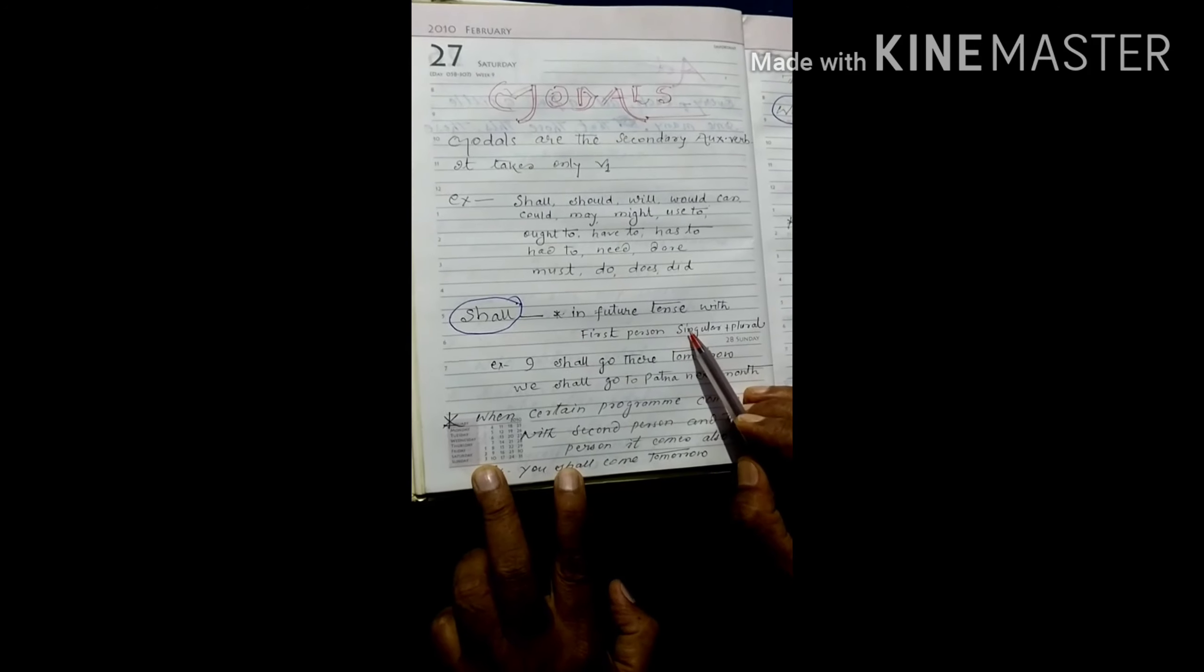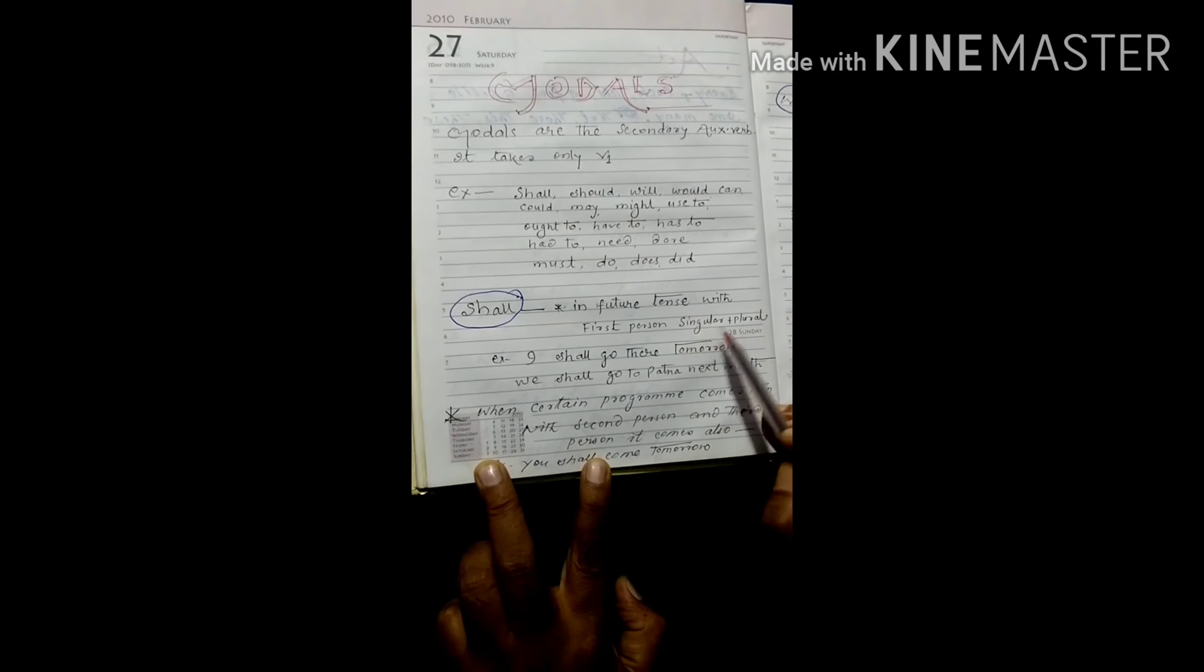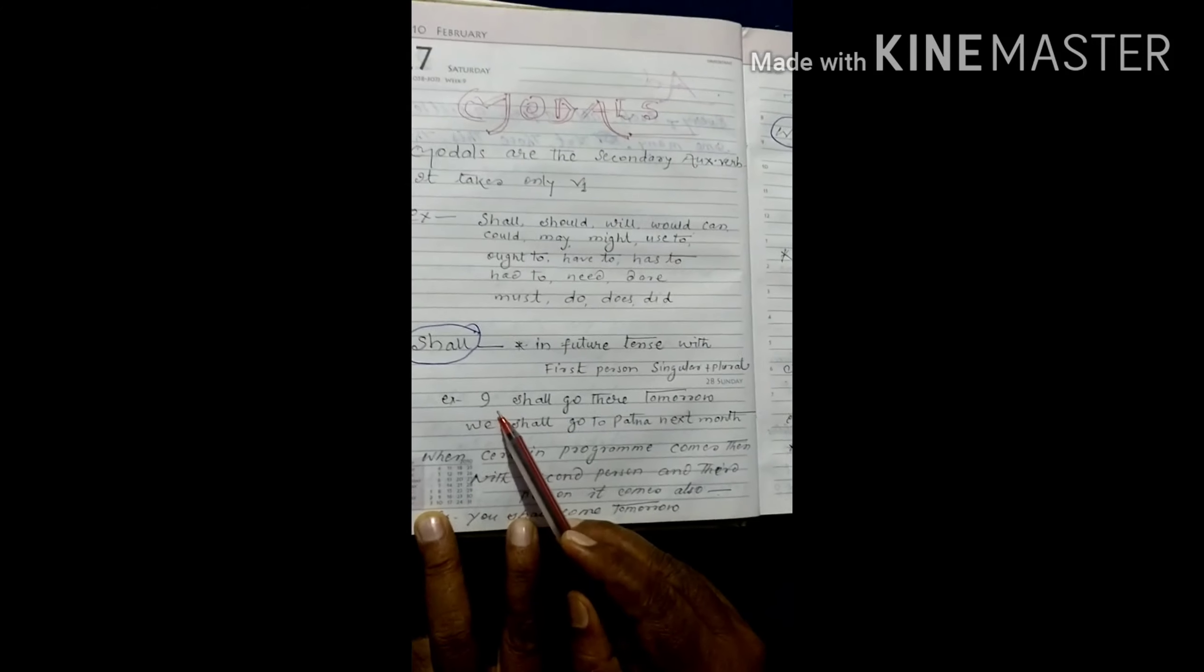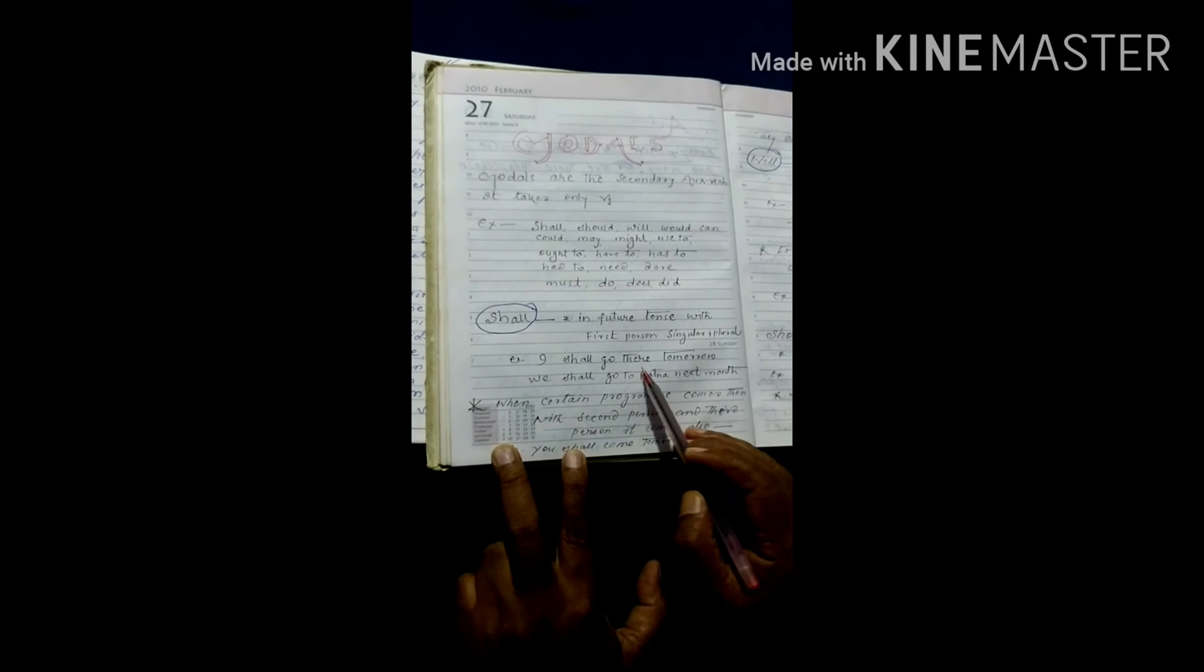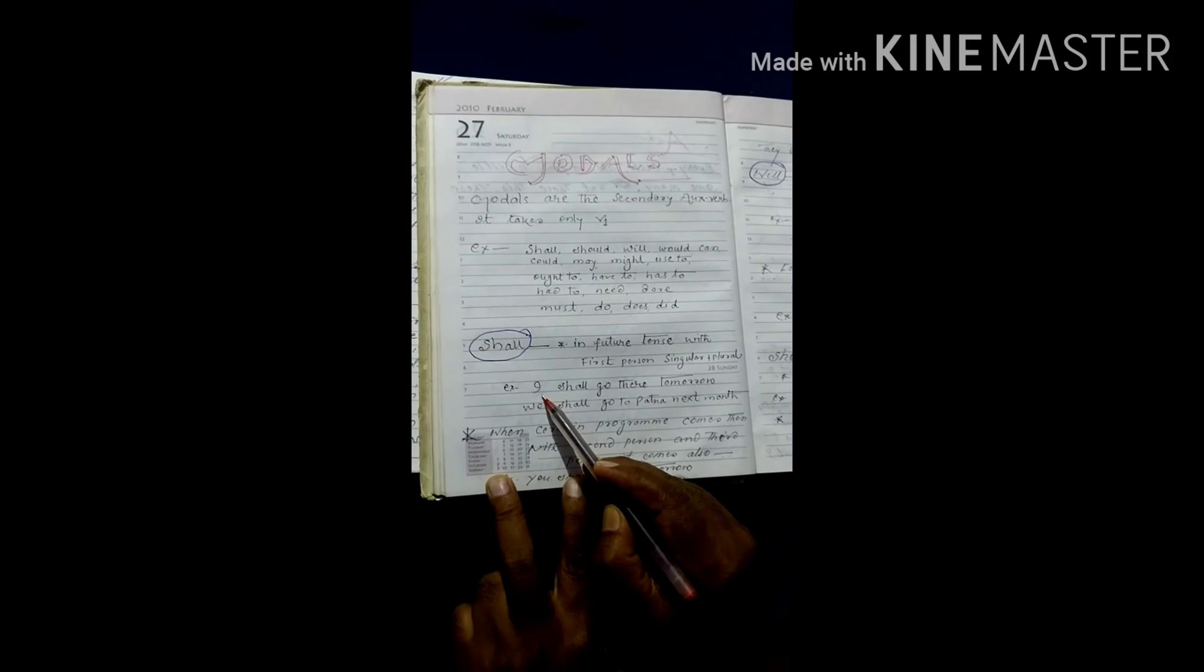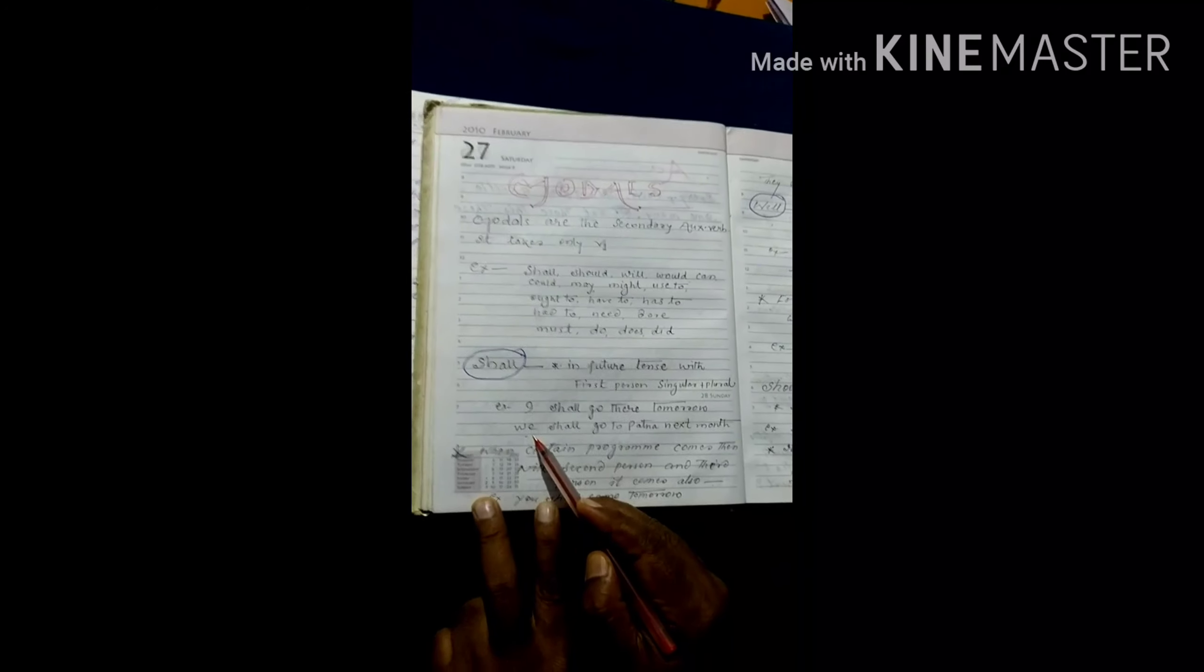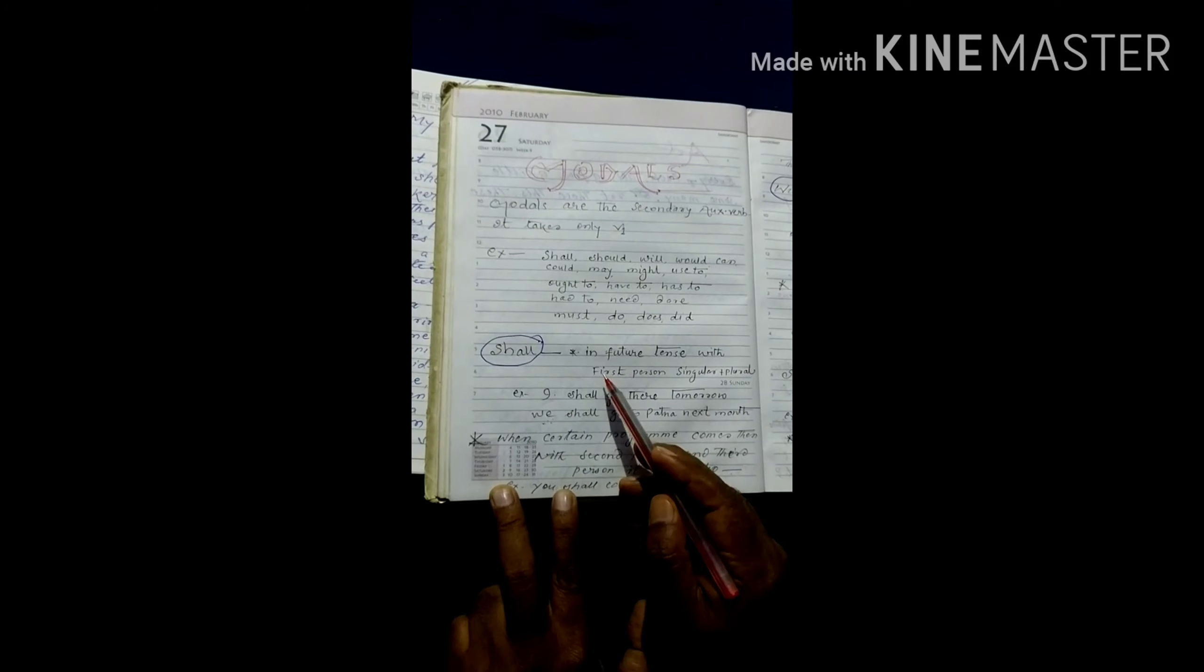Firstly, shall is used in future tense with first person singular plus plural. That means, in first person singular and plural, both, for reflecting future idea, you can use shall. For example, I shall go there tomorrow. Here the pronoun is I, which is in first person and singular number. Secondly, we shall go to Patna next month. Here you are saying as a subject, first person in plural form. So, in singular form of first person and plural form as we in first person, shall is used to reflect common future tense.